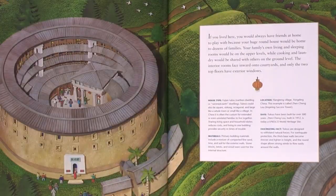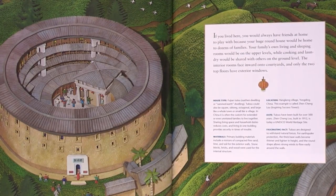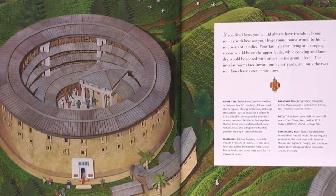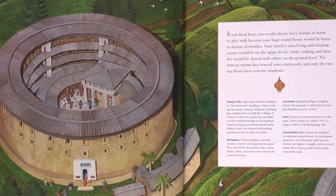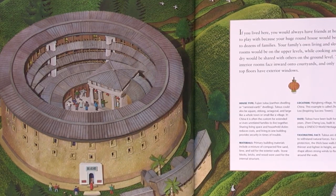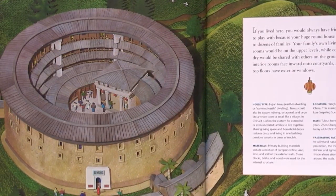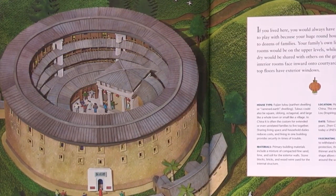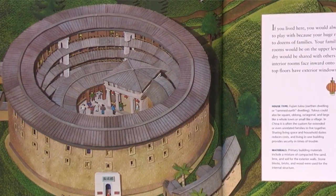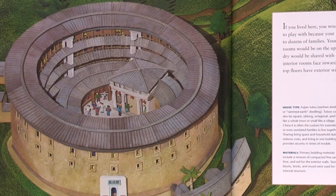If you lived here, you could always have friends at home to play with because your huge roundhouse would be home to dozens of families. Your family's own living and sleeping rooms would be on the upper levels while cooking and laundry would be shared with others on the ground levels. The interior rooms faced inward into courtyards and only the two top floors have exterior windows.